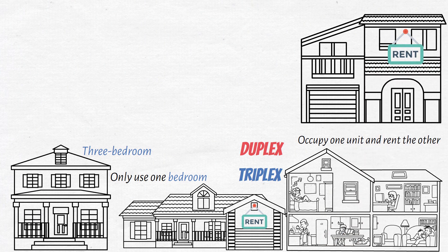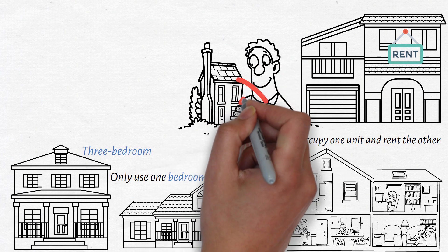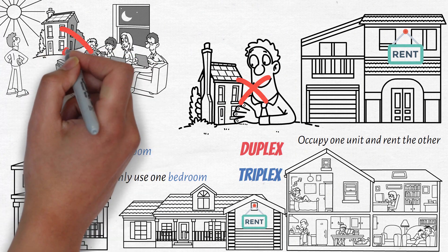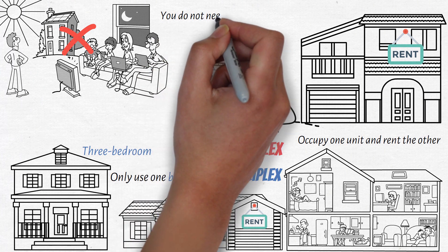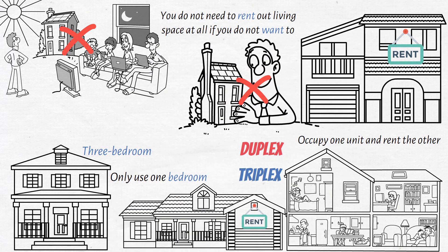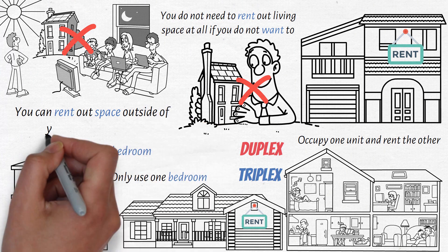A common reason for not implementing this method is that people do not want to be landlords and do not want to live with their tenants. However, you do not need to rent out living space at all if you do not want to. Instead, you can rent out space outside of your home for a fee.